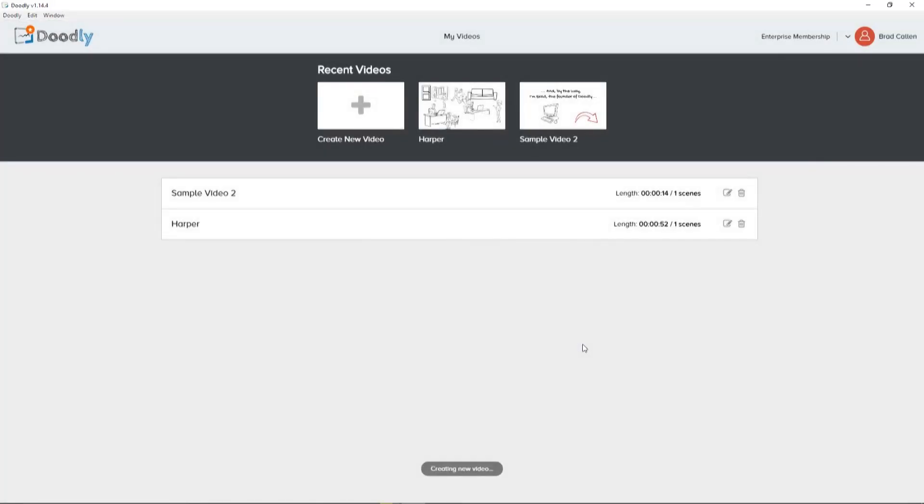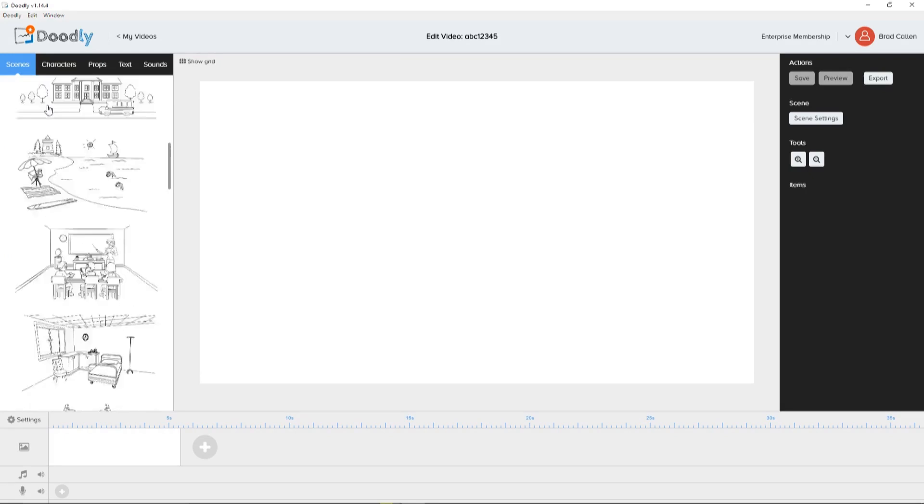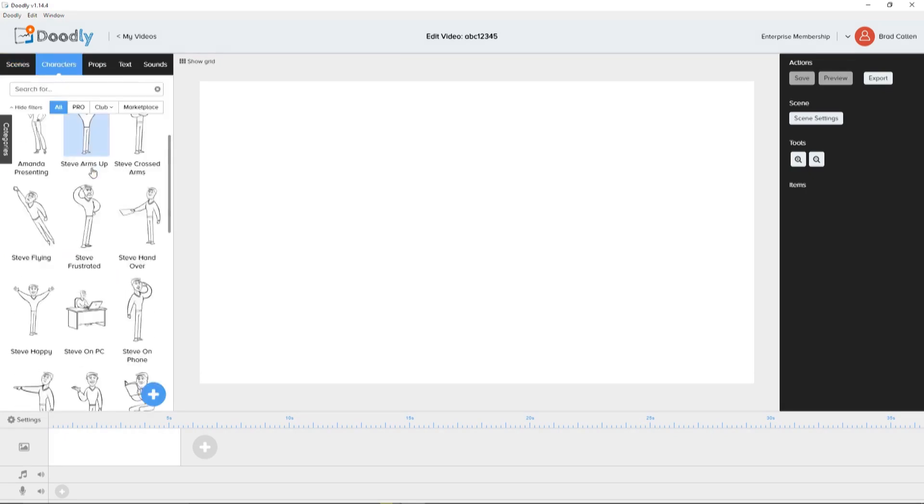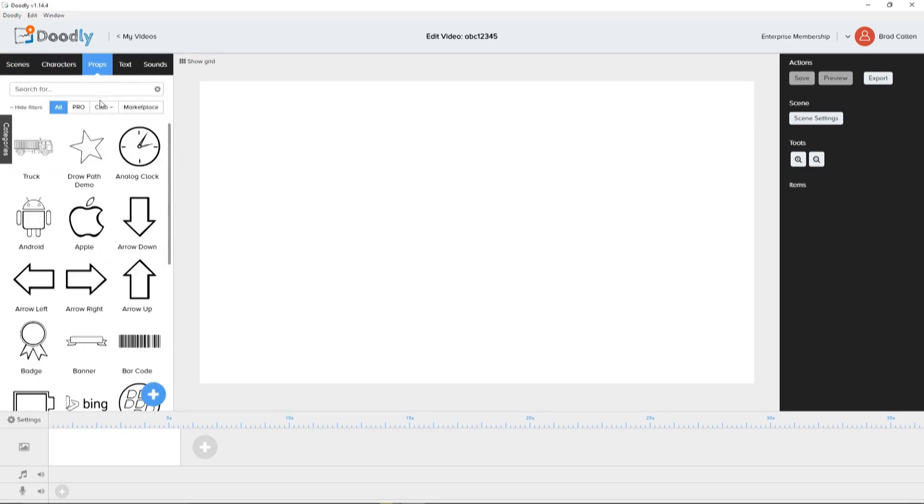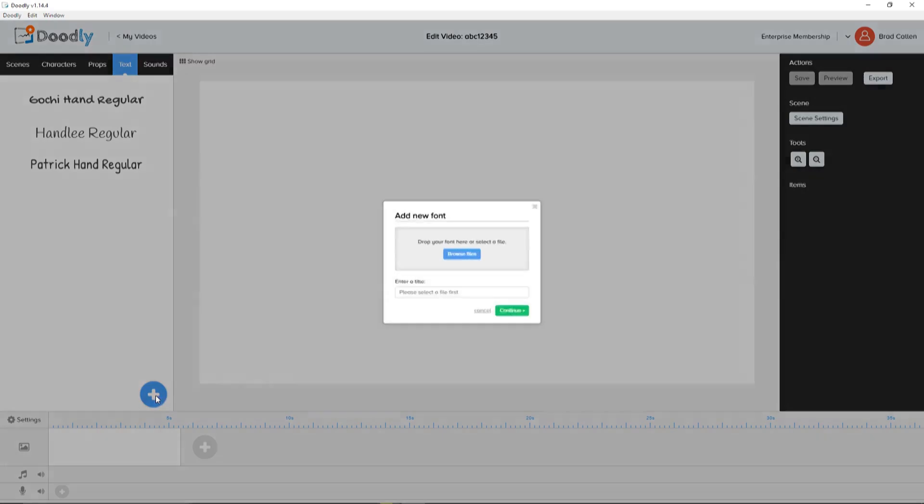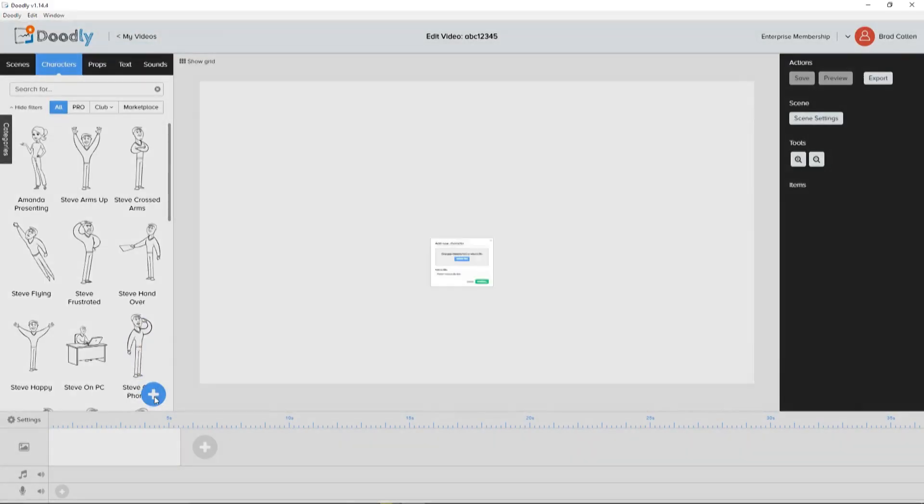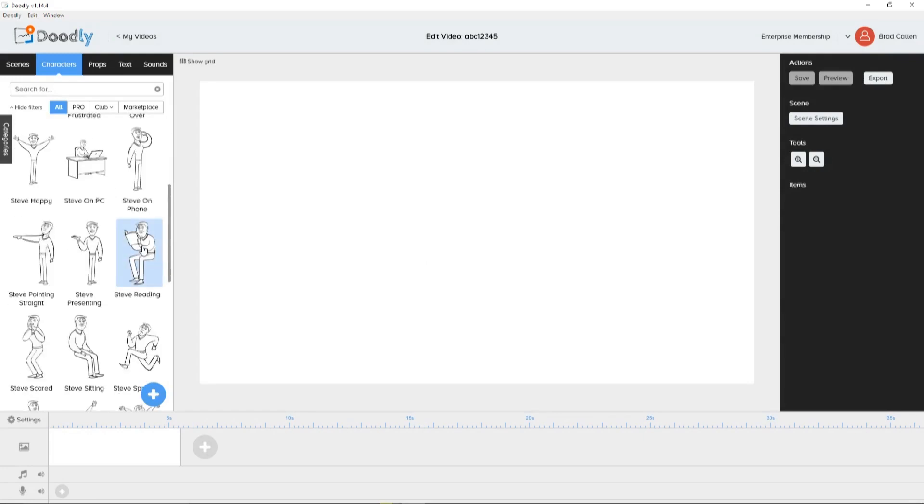As soon as you start, you're going to notice that you can customize your own doodle videos with our done-for-you scenes, our hundreds of characters, our collection of props and images, our royalty-free music, and even text. And yes, you can upload your own images, props, fonts, and music. Now, to create your own doodle video, it's really simple.